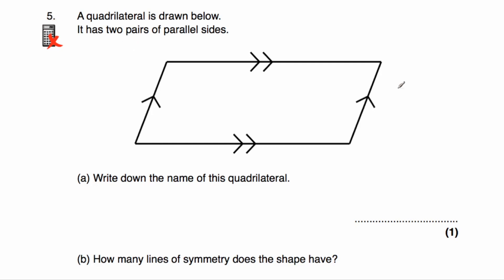Question number five. A quadrilateral is drawn below with two pairs of parallel sides. The left-hand side and the right-hand side are parallel, shown by arrows, and the top is parallel to the bottom, shown by double arrows. Part A: write down the name of this quadrilateral — it's a parallelogram.